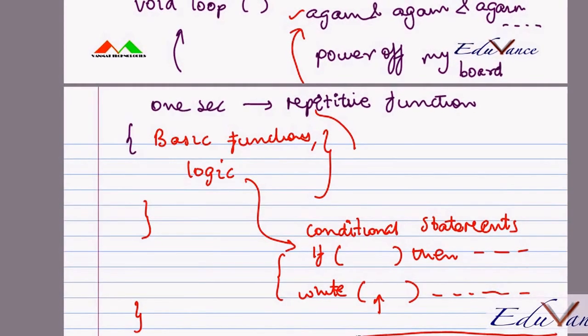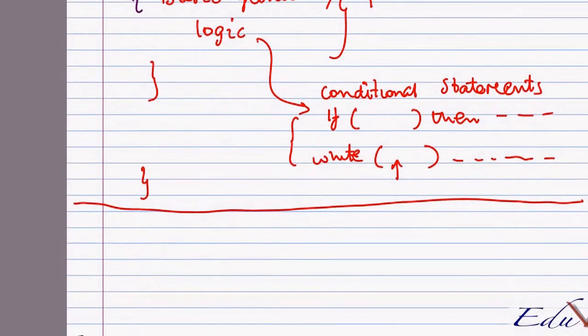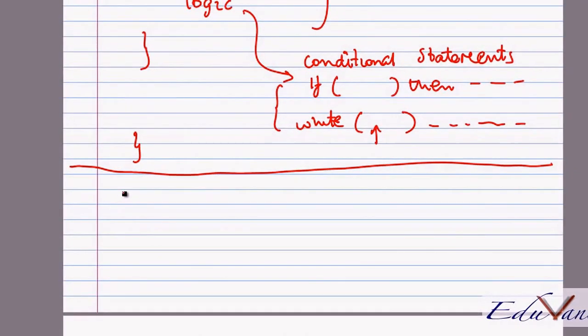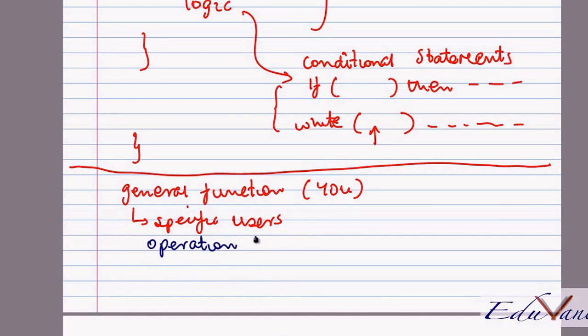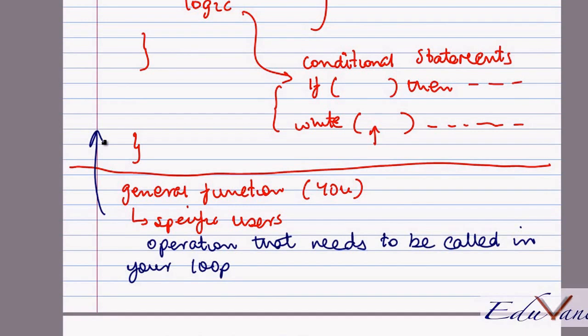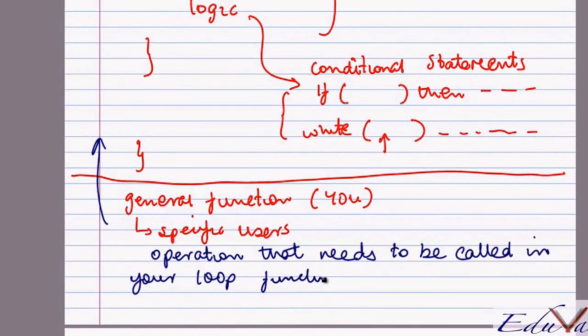The third section, that was the loop, would be here and then in slightly more advanced cases, we would include a fourth section which would be some general functions. Please don't get misled by the word general, they are specific from a user's perspective. These functions are defined by you, the user. Why would you define this function? If you are doing an operation that needs to be called in your loop, that is your void loop, it makes sense to make it into a function.